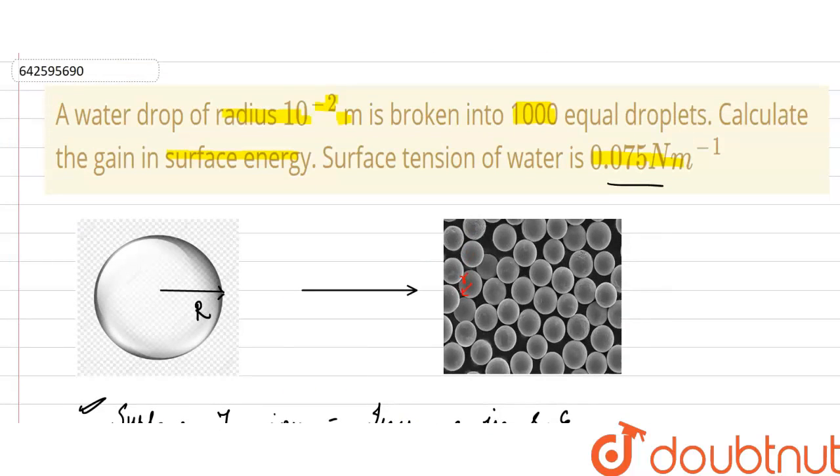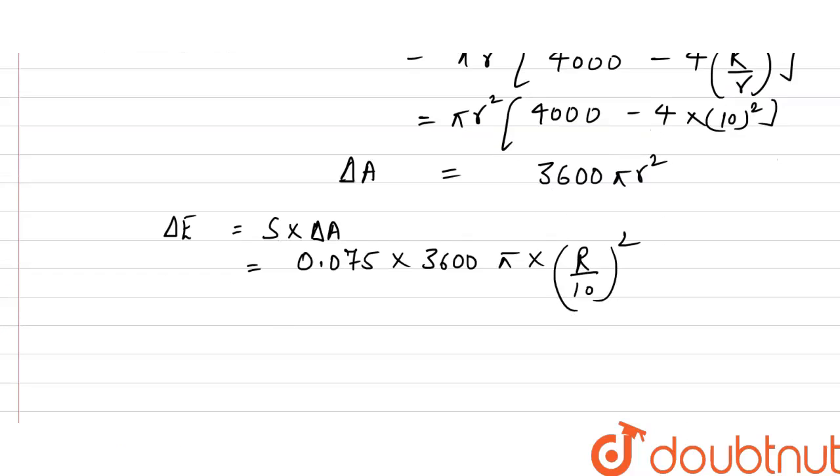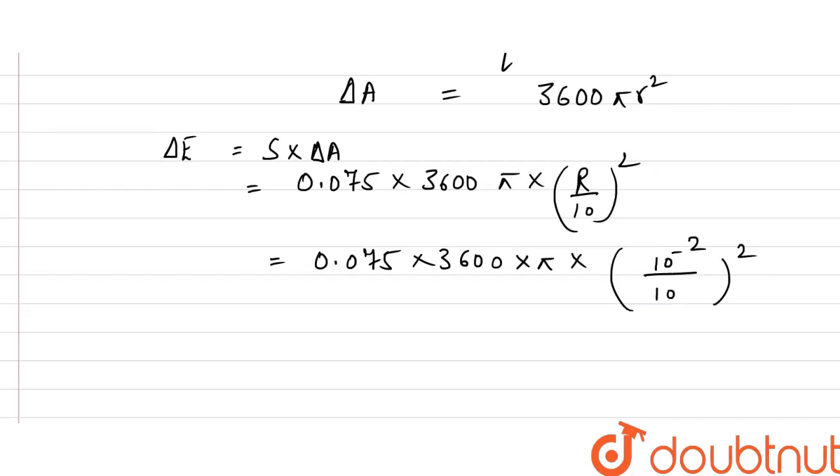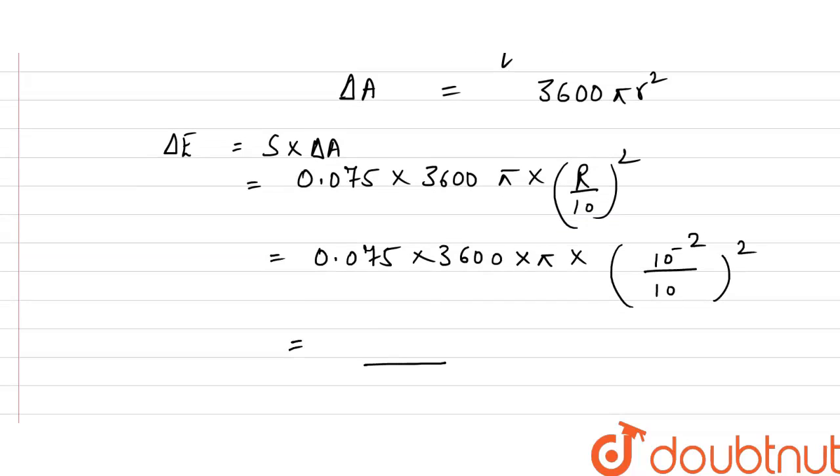Now r square can be written as R by 10 square. We know the radius of bigger bubble is 10 to the power minus 2 meter, so 0.075 into 3600 pi into radius is 10 to the power minus 2 by 10 meter. So the change in surface energy comes out to be equal to 8.5 into 10 to the power minus 4 joule.